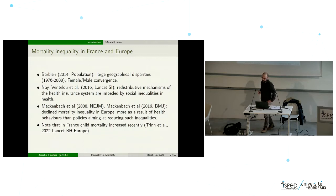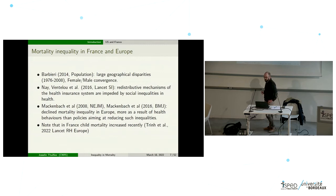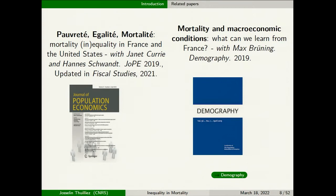In Europe, there are many papers from Mackenbach and others in the New England Journal of Medicine or the BMJ showing declining mortality inequality in Europe, more as a result of health behaviors than policies aimed at reducing such inequalities. I would also like to note that in France child mortality has been increasing recently, and a paper in Lancet Regional Health Europe in 2022 shows this trend — this is probably a recent issue in France.